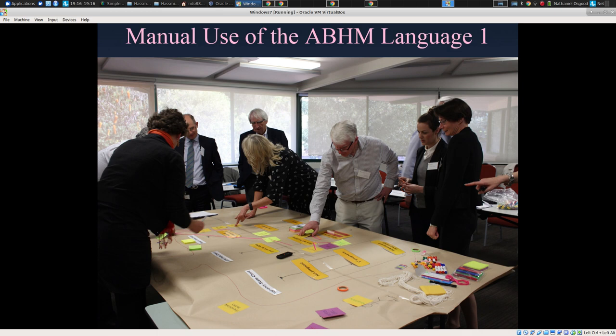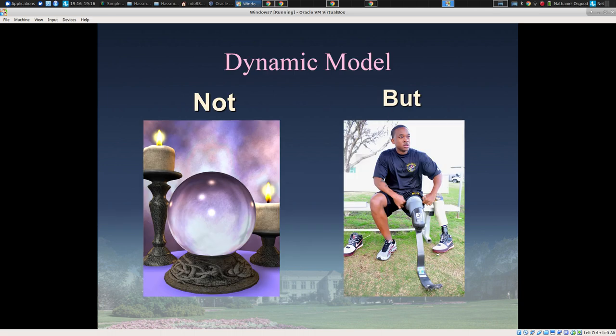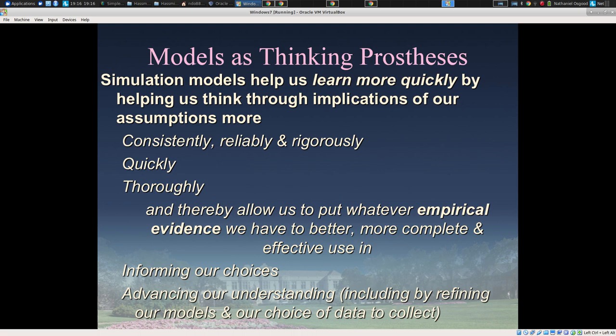We can take ideas out of our heads expressed in inchoate ways and put them into a fashion that's explicit so they can be critiqued by groups and tested by those with long experience in the system — as from a wonderful stakeholder session run by Joanne Atkinson at the Sachs Institute and Louise Free Barron at ACT Health in Australia, that I had the privilege of being involved in. Another reason I model to learn faster is that models help me make my assumptions explicit and testable. Far from being a crystal ball, models are best viewed as learning prostheses — tools for helping us think more quickly, more deeply, more reliably, more consistently through the consequences of our actions.